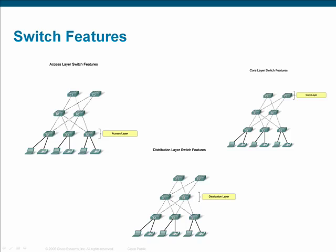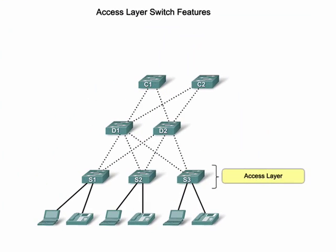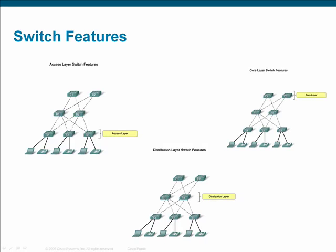When choosing an access layer switch, consider whether PoE is necessary to power IP phones or wireless access points. Quality of service should also be implemented if IP telephony is present in the network. Access layer switches should ideally include VLAN capability. The access layer is where users connect to the network, so choosing a switch with sufficient port density is important. Link aggregation should also be considered if your network has consistently high volumes of traffic.